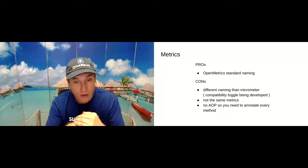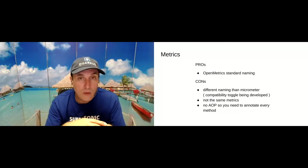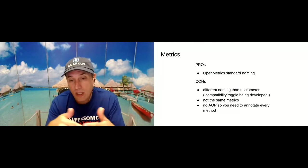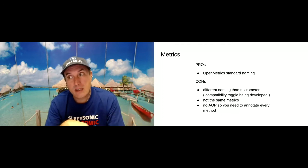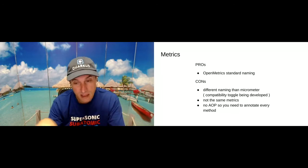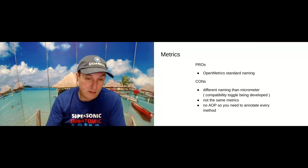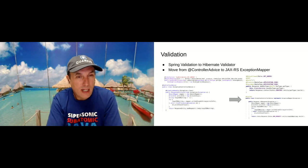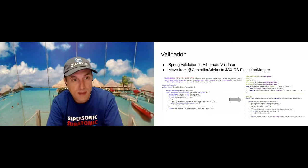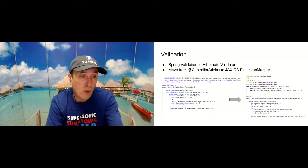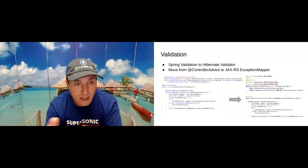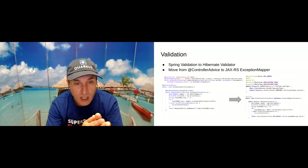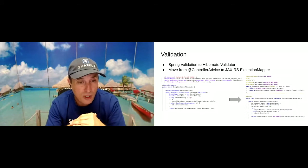The biggest problem for me was that with Spring you can use AOP and it's very easy to have metrics for lots of methods with only two lines. Since we don't have AOP in Quarkus, we need to annotate every method, or we can use interceptors in CDI, or use the special Hibernate metrics property to get Hibernate metrics put on the log. Regarding validation, it's about moving from Spring Validation to Hibernate Validation and moving from ControllerAdvice to an ExceptionMapper.